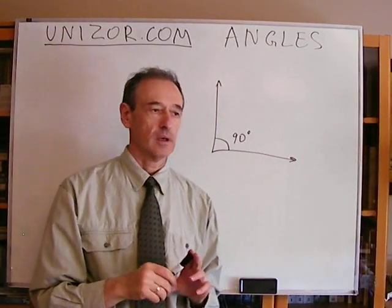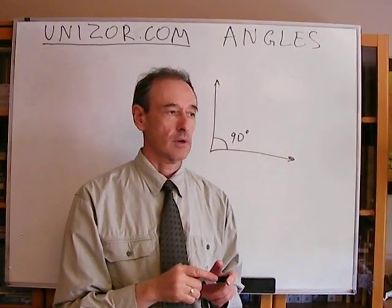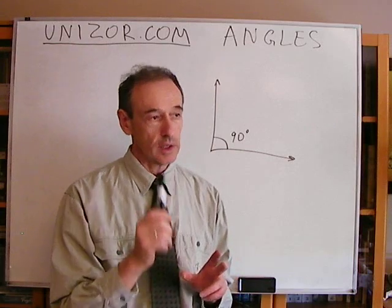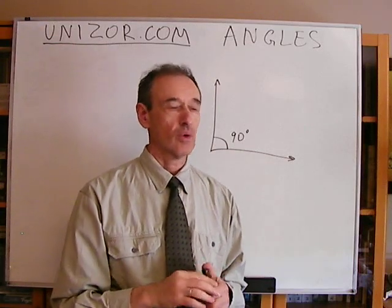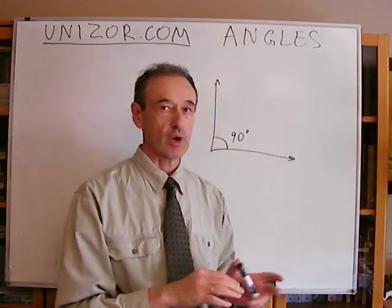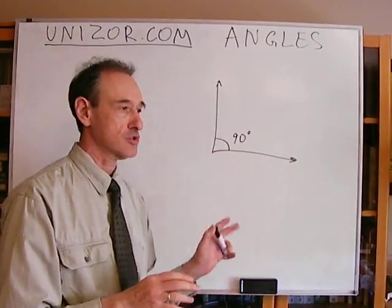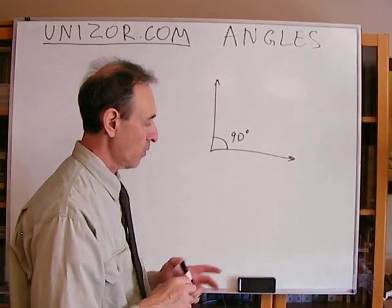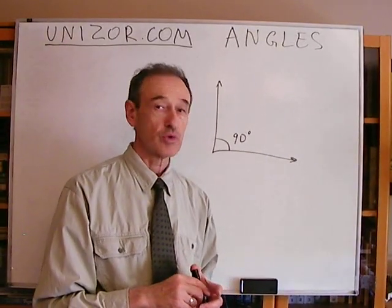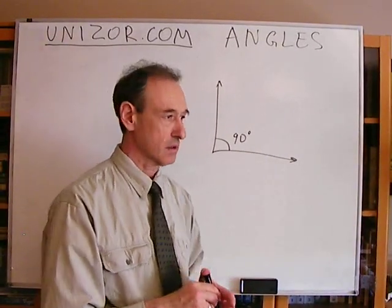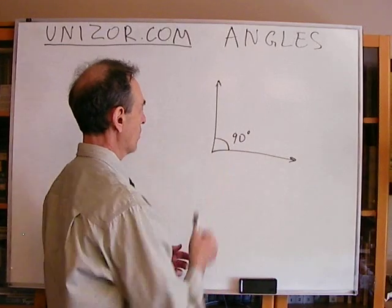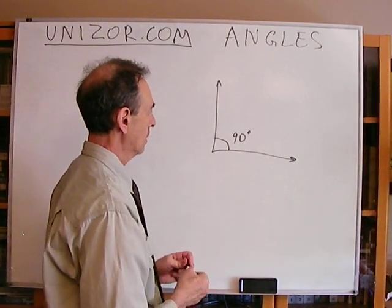There are other measurements of the angles. Well, actually, one other measurement of the angle, called radian. But we will talk about this a little later. We will talk about circles. But right now, let's just agree about the degrees as measurements of the angle. So we have right angle, which is 90 degrees.